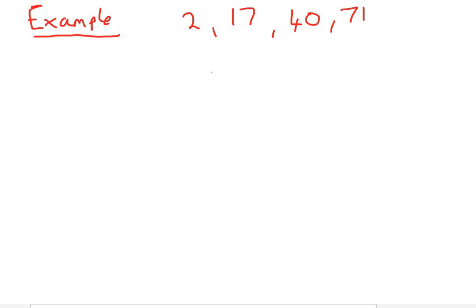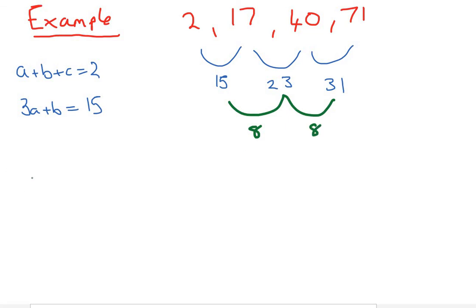Right then, we've returned to this example. And if you remember, before we had a plus b plus c equals 2, 3a plus b equals 15. And now we know why these formulas work. We proved them for any sequence. So, let's take a look at the second difference, and then we'll be good to go. So, this difference here is 15, 17 to 40 is 23, and 40 to 71 is 31. Therefore, the second differences are 8. And remember,